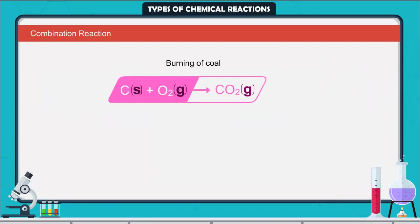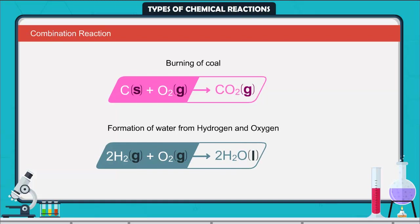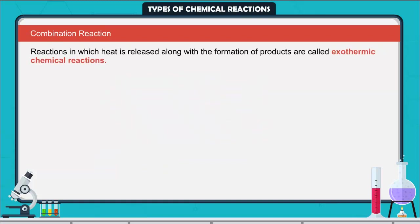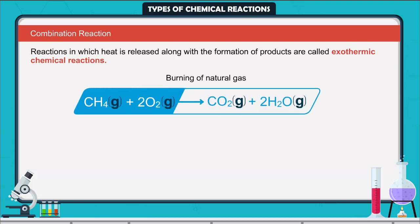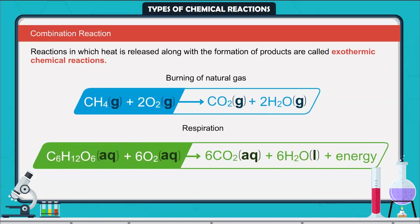More examples of combination reactions include burning of coal and formation of water from hydrogen and oxygen. Reactions in which heat is released along with the formation of products are called exothermic chemical reactions. Examples include burning of natural gas and respiration, in which glucose combines with oxygen in the cells of our body and provides energy.